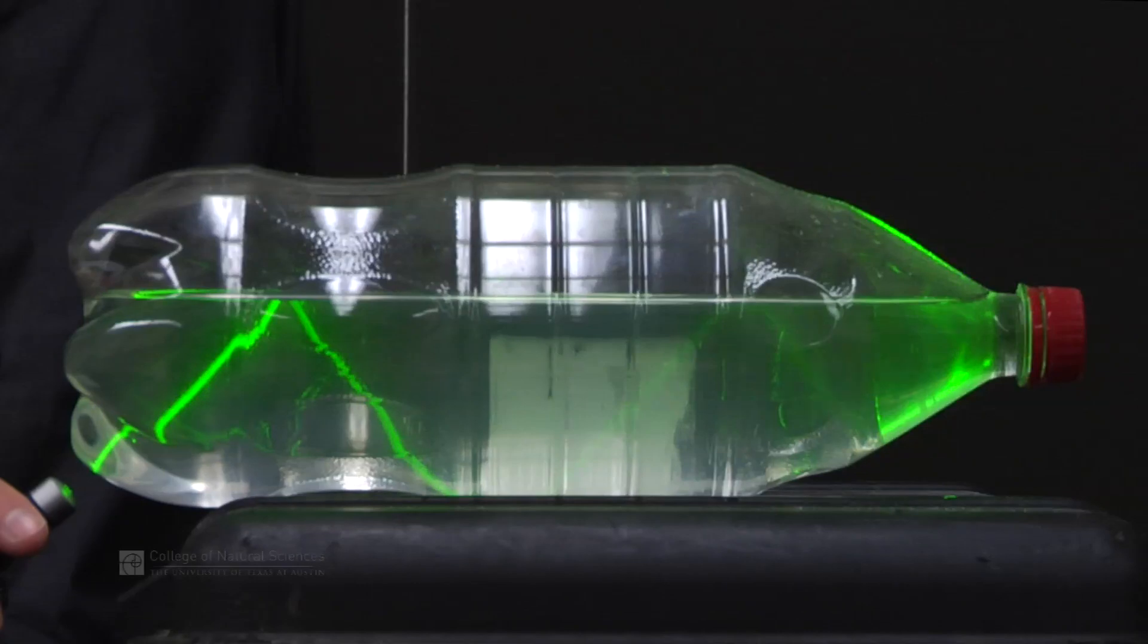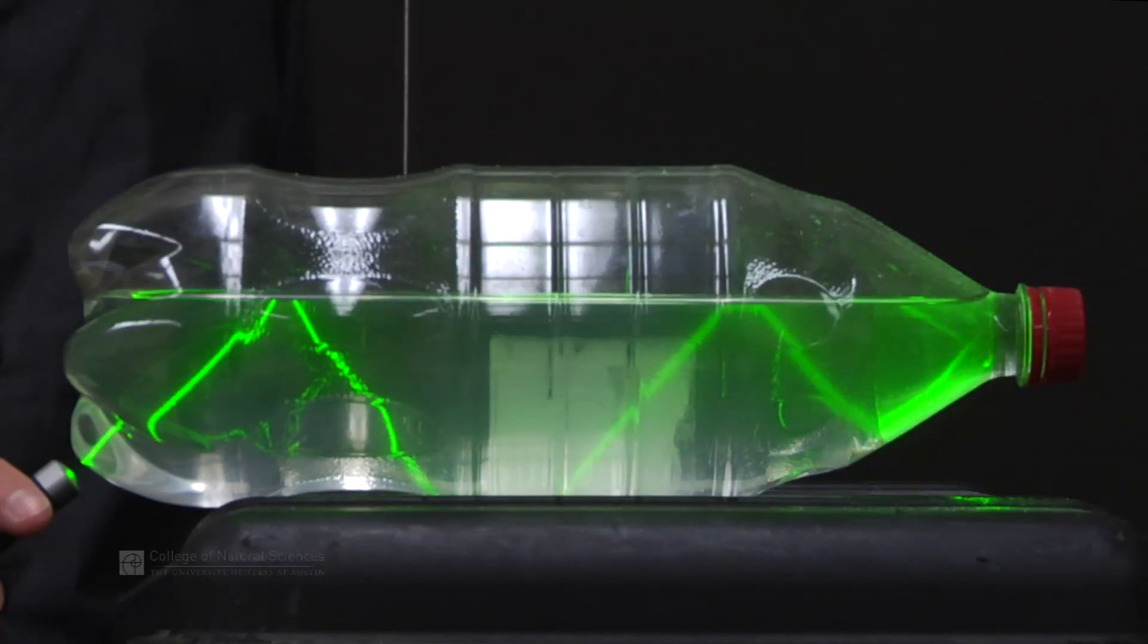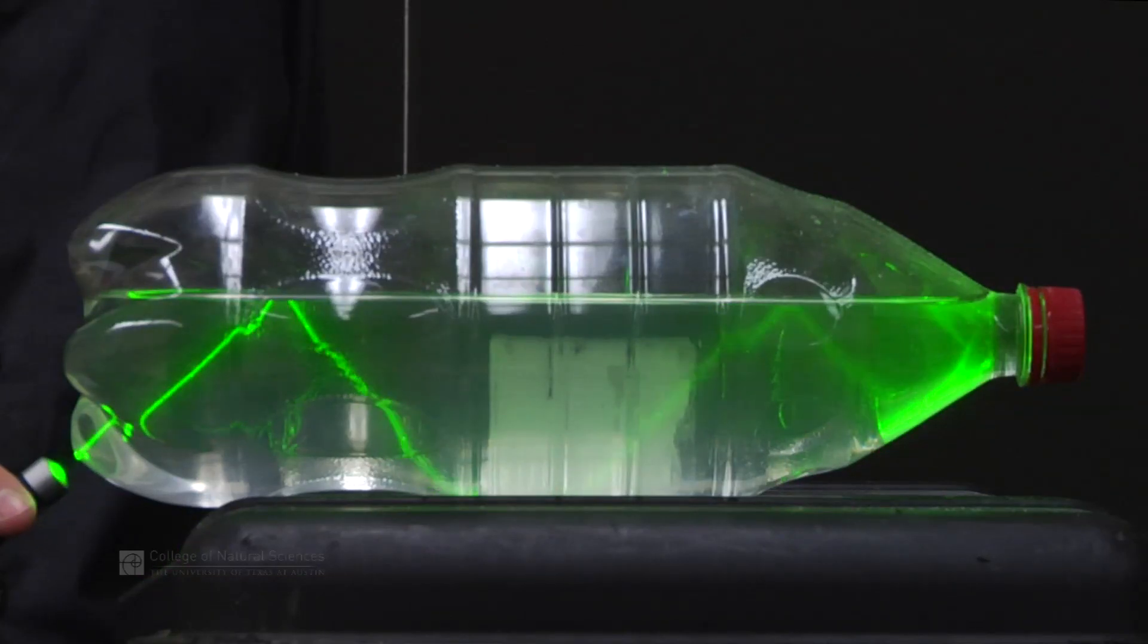But as we turn the angle and we increase the angle, you'll notice at one point that the light stops leaving the water and it's totally reflected by the surface of the water. And this is what we mean by total internal reflection. It means that the light literally cannot get out of the water.